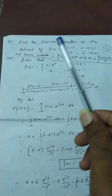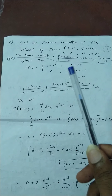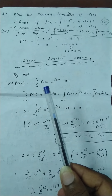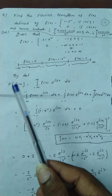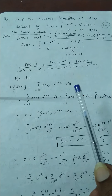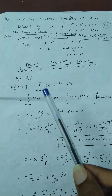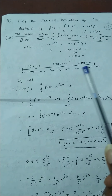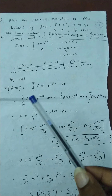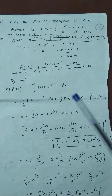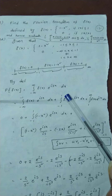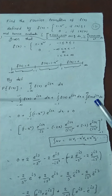For this function, we have to find the Fourier transform. By definition, the Fourier transform of f(x) is the integral from minus infinity to infinity of f(x) times e to the power isx dx. The integration is defined on minus infinity to infinity, but our function is defined in three intervals: minus infinity to minus 1, minus 1 to 1, and 1 to infinity. So I am splitting the integral into three parts.